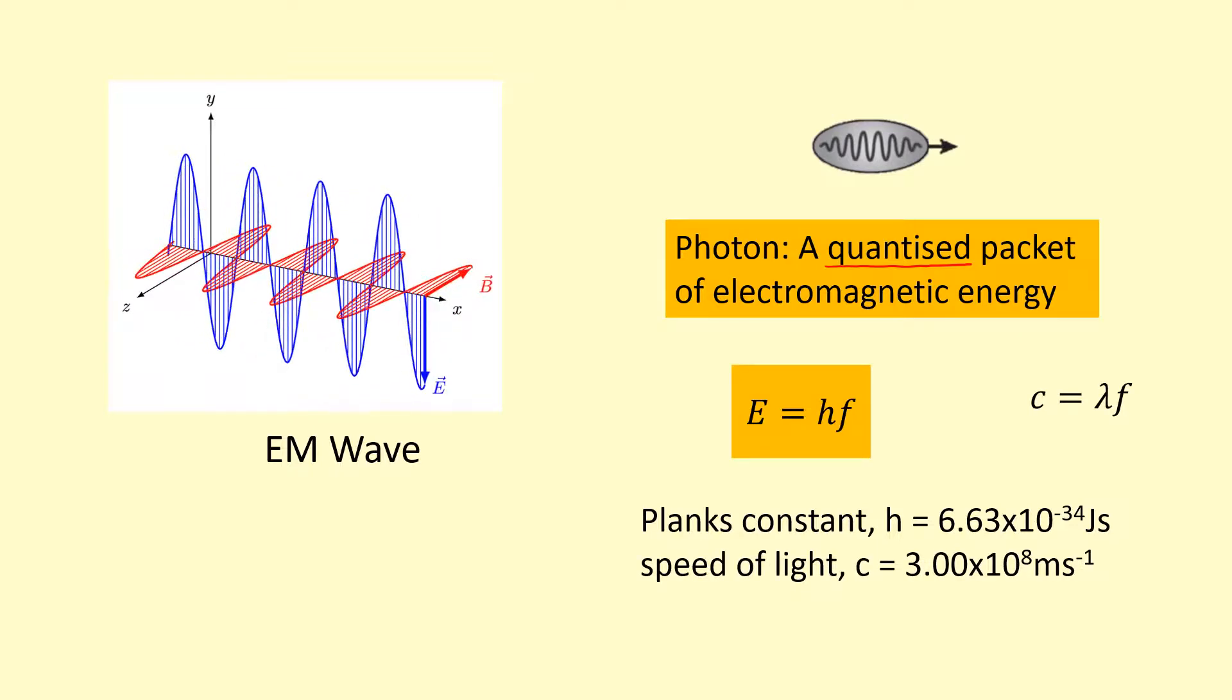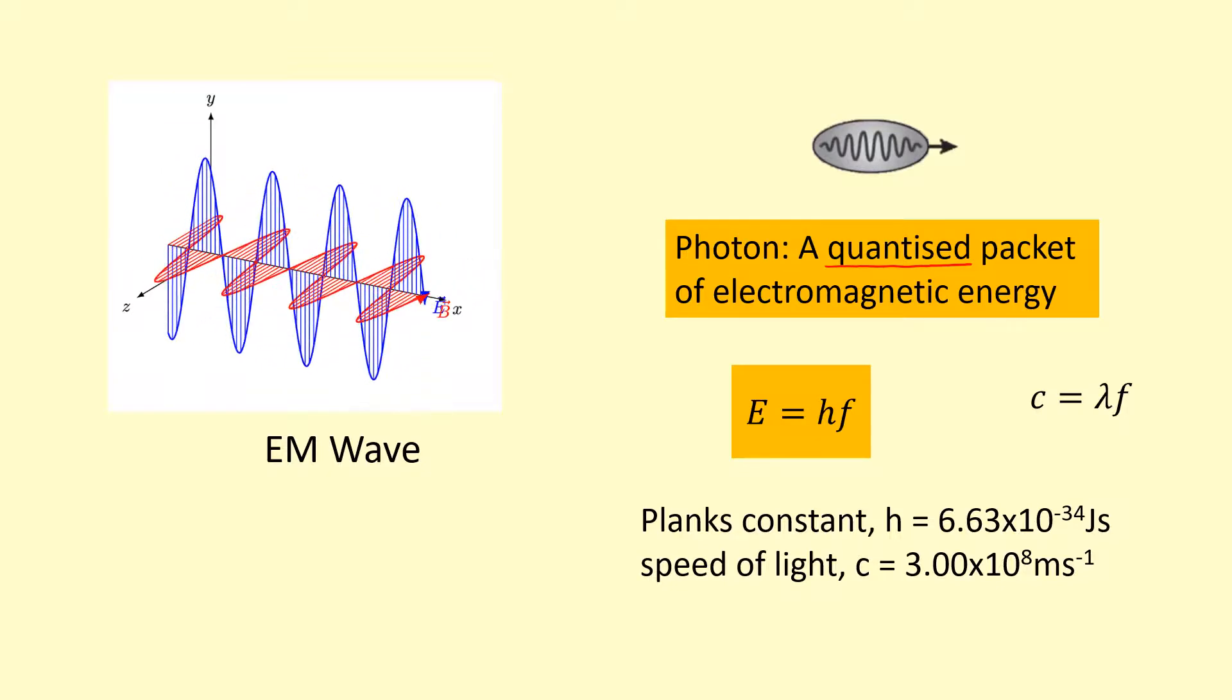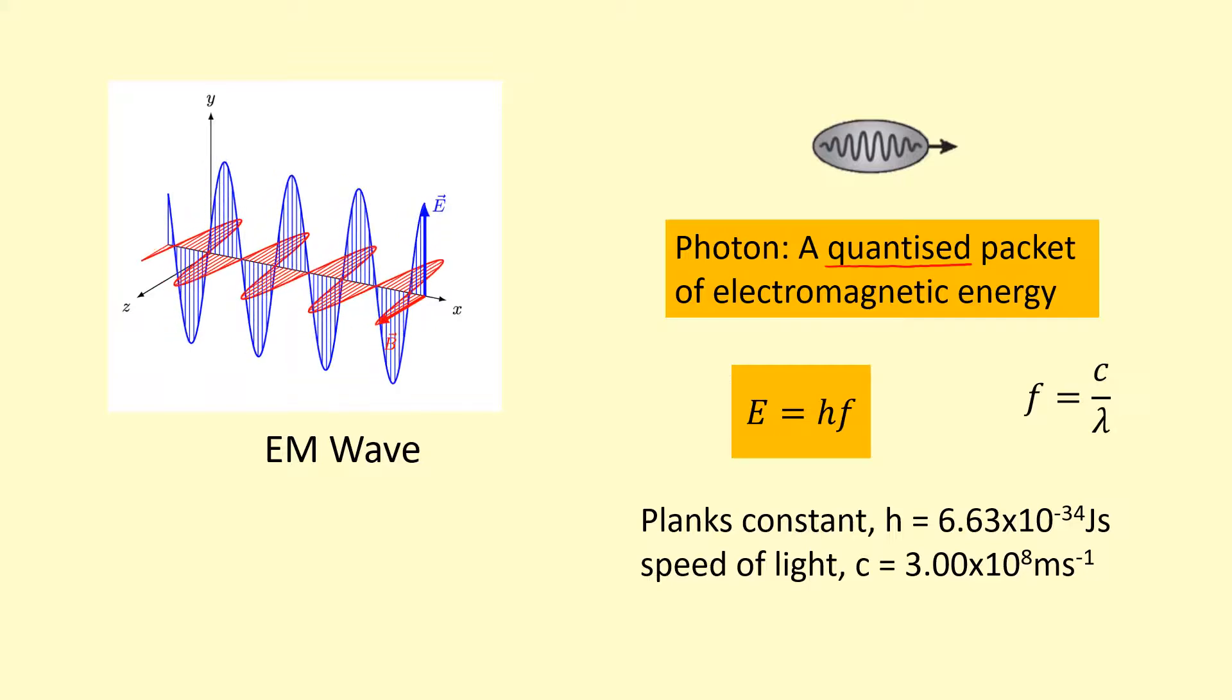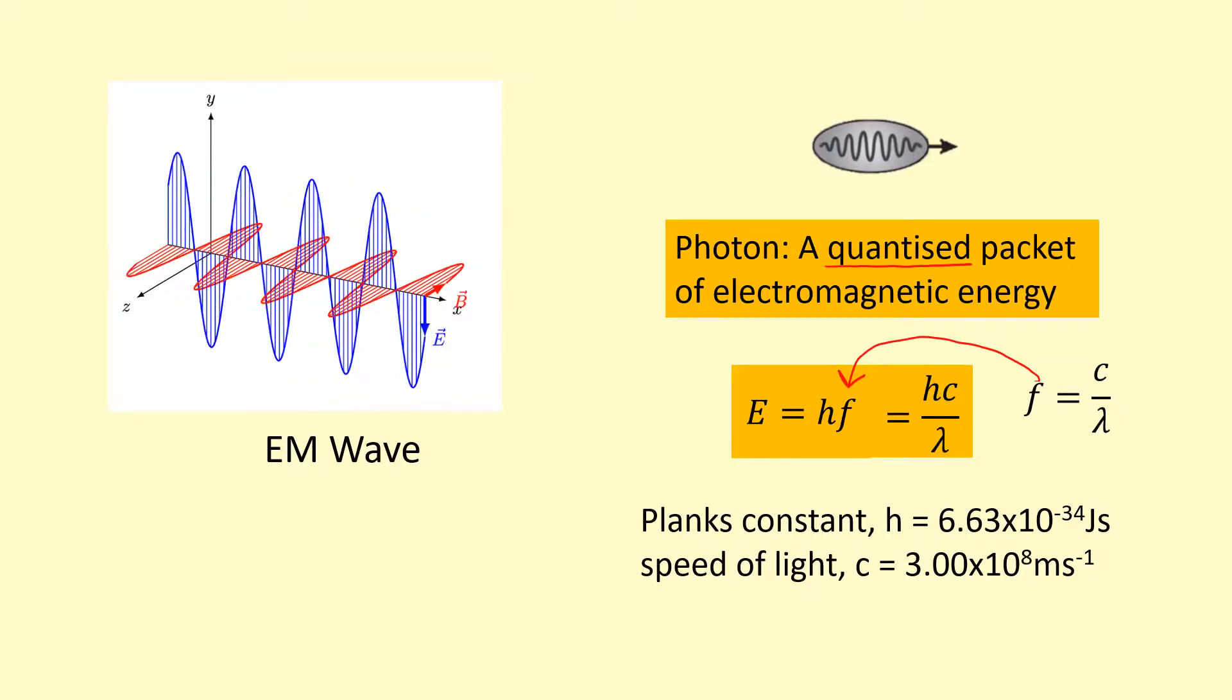In which case, I can write this equation here, where speed is equal to wavelength times frequency from the wave's topic. I'm going to rearrange this to make F the subject and put this in here to get this useful equation.